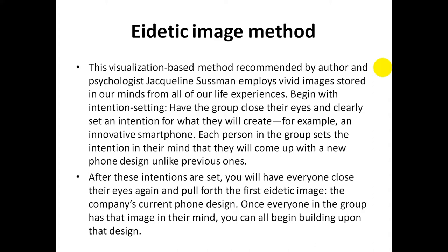The Eidetic Image Method begins with intention-setting, having the group close their eyes and clearly set an intention for what they will create. For example, an innovative smartphone. Each person in the group sets the intention in their mind that they will come up with a new phone design unlike previous ones. After these intentions are set, everyone closes their eyes again and pulls forth the first eidetic image — the company's current phone design. Once everyone in the group has that image in their mind, they all begin building upon the design.